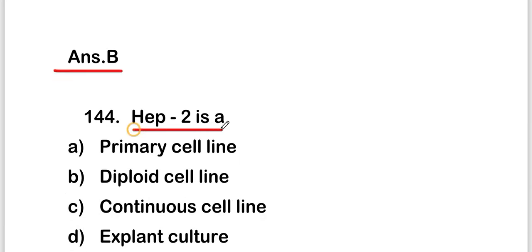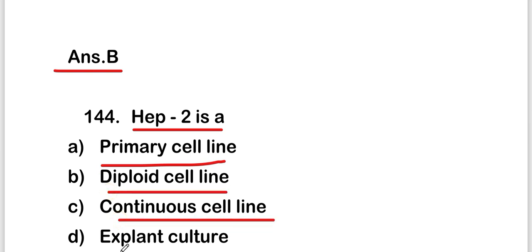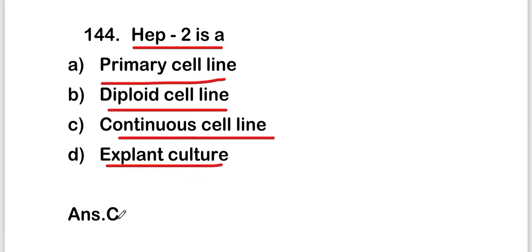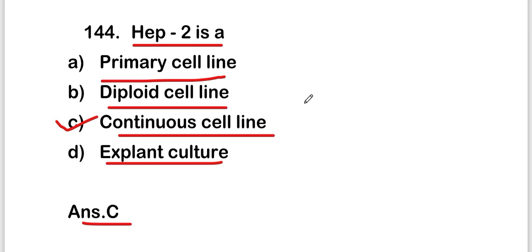The next question is: HEp-2 is a primary cell line, diploid cell line, continuous cell line, or explant cell line? The right answer is option C, that is continuous cell line. So HEp-2 is a continuous cell line.